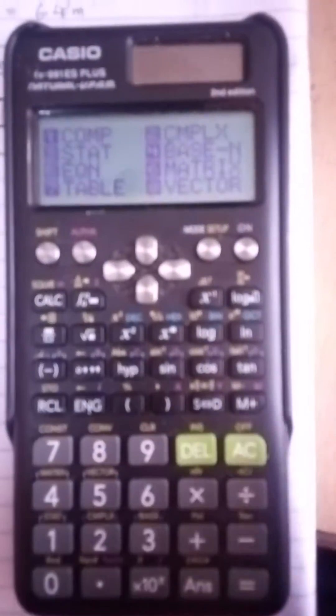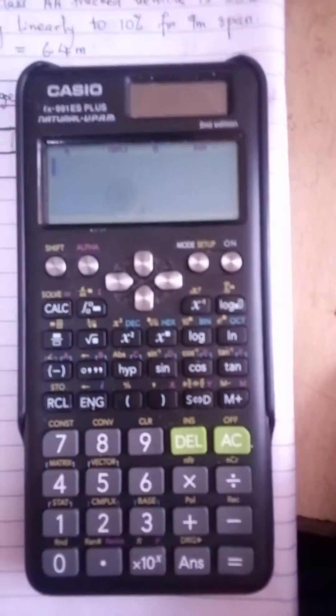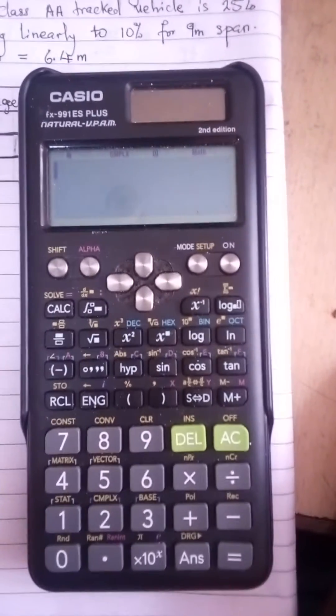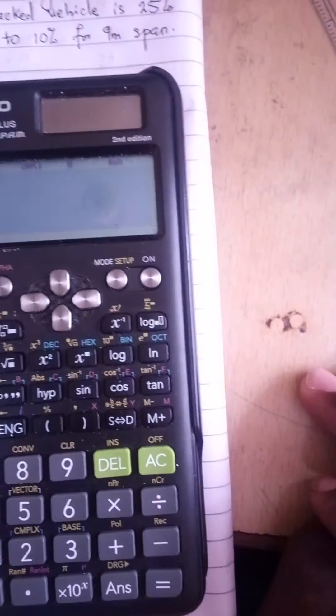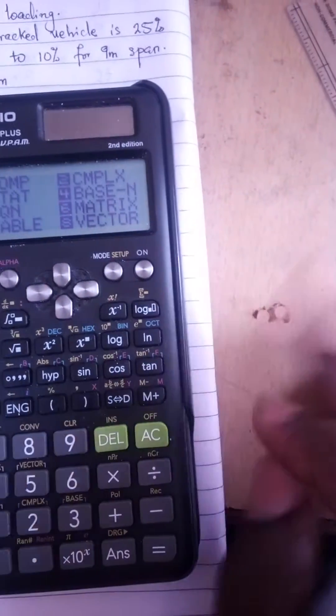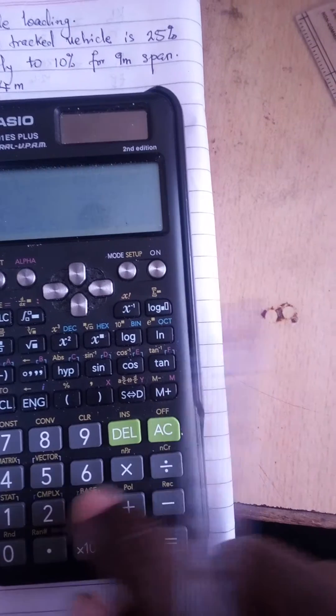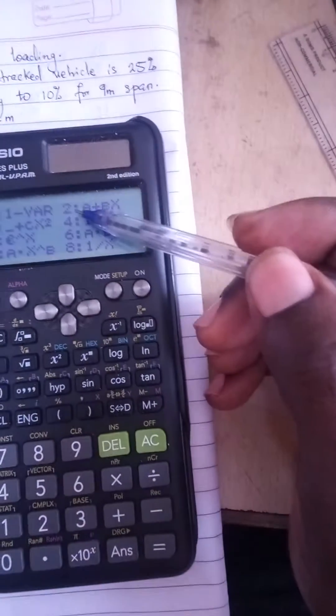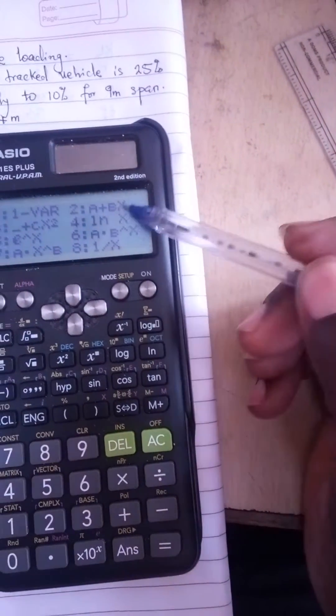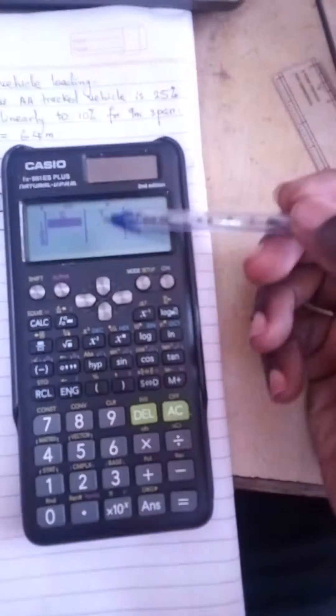Wait, I think I have done the wrong thing. You press mode, sorry, not 2. You press 3 - 3 stands for statistics. You press 3, then you press this particular equation which is number 2. You press that 2 and then you will come up with this table.